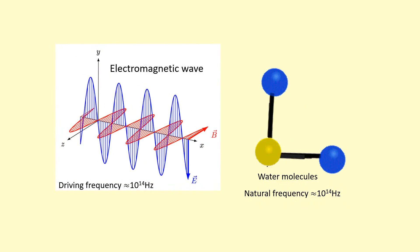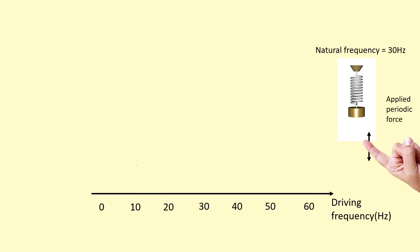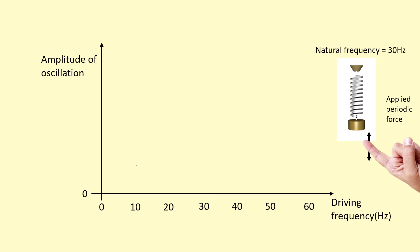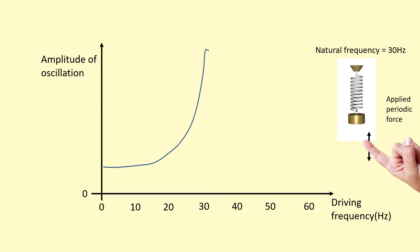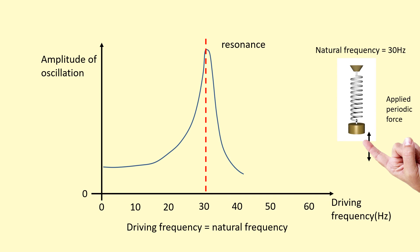Back to the mass-spring example — let's say this one oscillates at a natural frequency of 30 hertz. I'm going to apply a periodic force at different frequencies and plot a graph with driving frequency on the x-axis and amplitude on the y-axis. Starting at a very low frequency and increasing toward 30 hertz, the amplitude increases. At 30 hertz, I get the largest amplitude oscillations — that is resonance, when the driving frequency equals the natural frequency, giving efficient energy transfer from the periodic force to the system. Going beyond 30 hertz to 60 hertz, the amplitude decreases again.